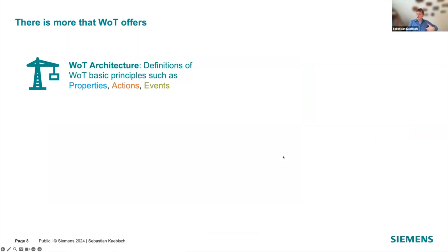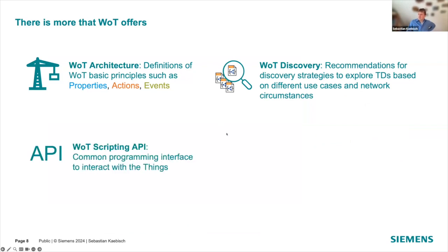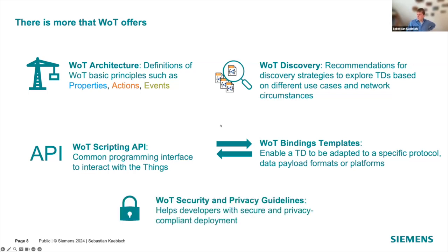We're also doing more in Web of Things. We have defined architecture principles, recommendations for Web of Things Discovery — how to find specific Thing Descriptions, whether in an RDF-based store or distributed networks. We have API description specifications, binding template approaches to specify how protocols are described in a Thing Description, and importantly, security and privacy guidelines to keep your IoT system safe and protect privacy.